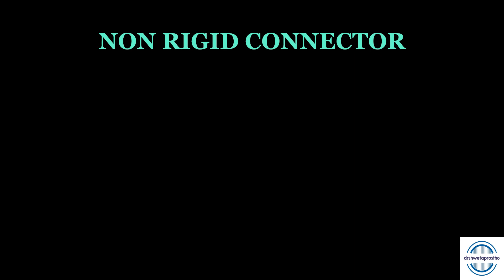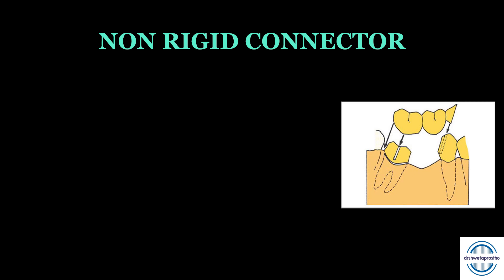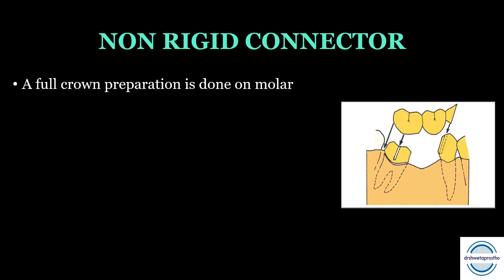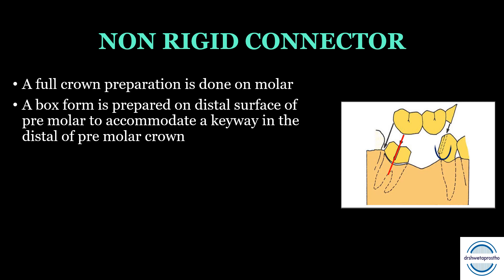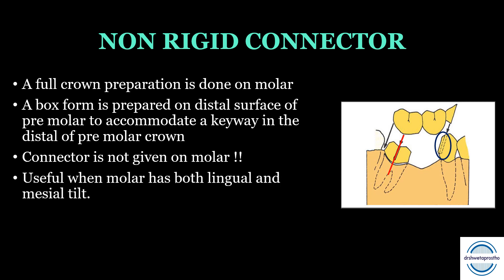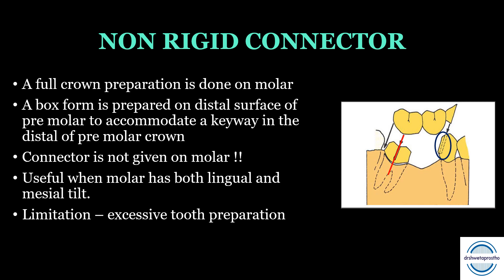Non-rigid connector — another solution for managing tilted molars. A full crown preparation is done on the tilted molar with its path of insertion along the long axis of the tilted tooth. A box form is prepared on the distal surface of the premolar to accommodate the keyway. Importantly, this connector is never placed on the mesial aspect of the tipped molar, as that could lead to even greater tipping — this is commonly asked in MCQs. Non-rigid connectors work very well when the molar has both lingual and mesial tilt. The limitation is that excessive tooth preparation is required.